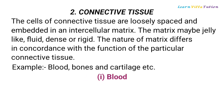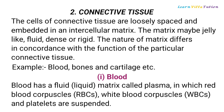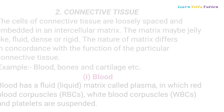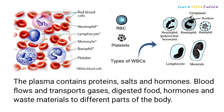Blood has a fluid, liquid matrix called plasma, in which red blood corpuscles (RBCs), white blood corpuscles (WBCs), and platelets are suspended. The plasma contains proteins, salts and hormones. Blood flows and transports gases, digested food, hormones and waste materials to different parts of the body.